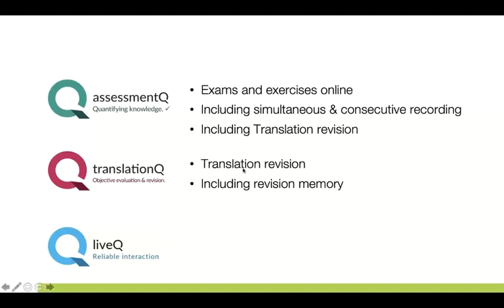For translation revision, students are presented with a source text and a target translation containing errors and must find and categorize them. The more developed version is Translation Queue — a separate platform also about translation revision, helping teachers evaluate translations more objectively. Its most important feature is a revision memory: all errors found by the evaluator are stored and automatically activated in all new translations presented to the system.